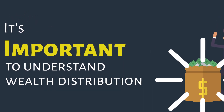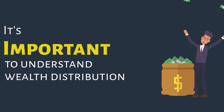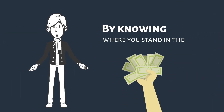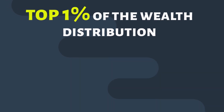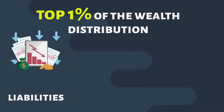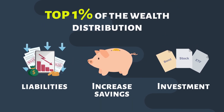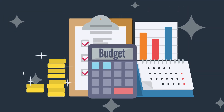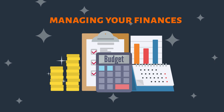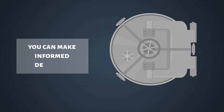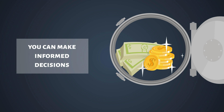It's important to understand wealth distribution in the context of your own financial situation. By knowing where you stand in wealth distribution, you can get a better understanding of your financial security and make informed decisions about your finances. For example, if you're in the top 1% of the wealth distribution, you may want to focus on reducing your liabilities, increasing your savings, and investing in a diversified portfolio to maintain your wealth over time. Understanding wealth distribution is an important step in managing your finances and building wealth.